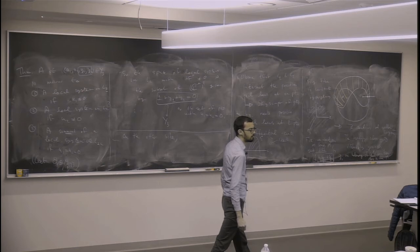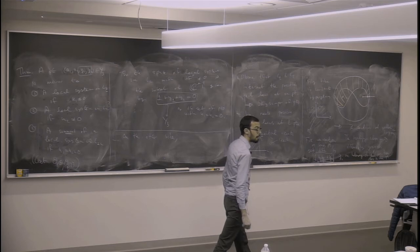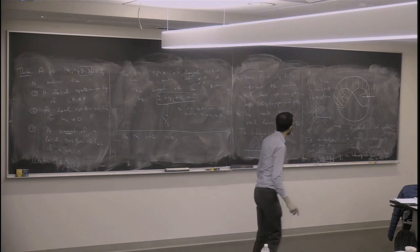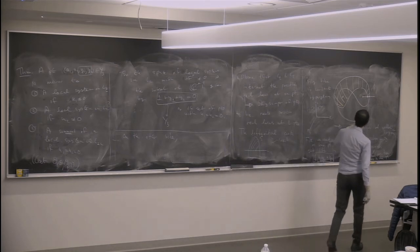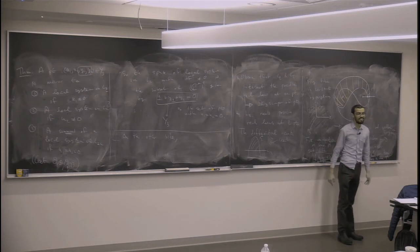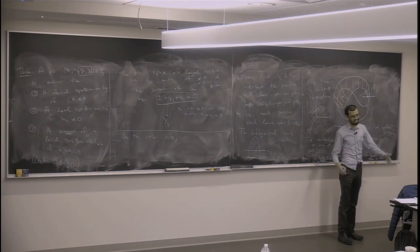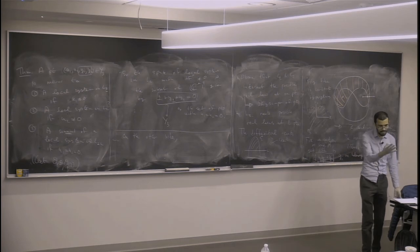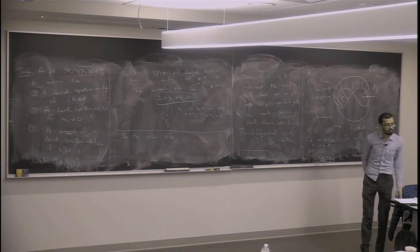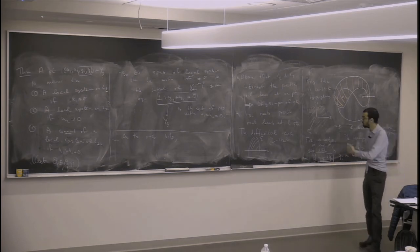This splitting is special for this example. In general you would expect some perverse shift. But mirror symmetry tells you on the other side you expect just skyscrapers from a point. In general, if you take a random singular Lagrangian, you're not going to get this.